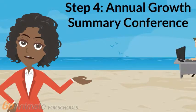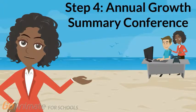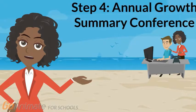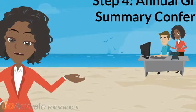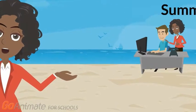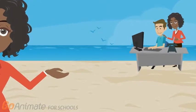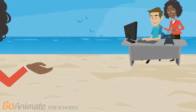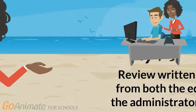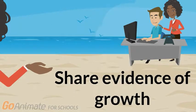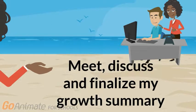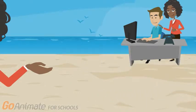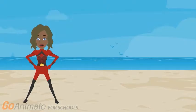The final step in the process is the annual growth summary conference. In step four, I will have a collaborative conversation with my administrator or manager to review progress towards my growth goals. I will share the sources of evidence that I've collected to demonstrate my growth, and together we will reflect on my current level of professional practice. As part of this step, we may review written reflections from both the educator and administrator or manager, share evidence of growth, meet, discuss, and finalize my growth summary, celebrate success, and talk about the next step, which could unleash the inner superhero.